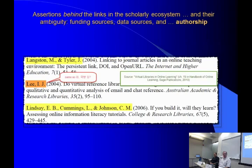Some Scandinavian authors have 10, 12, or 16 different forms of their names, depending on how you abbreviate middle initials and whether you use all the right Scandinavian characters. So relying on names to tie all the elements of the research lifecycle and scholarly ecosystem together is a very uncertain proposition — but that's what we've been doing up to now.